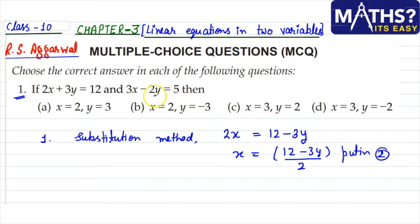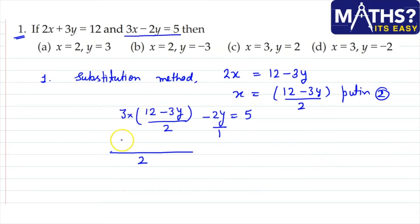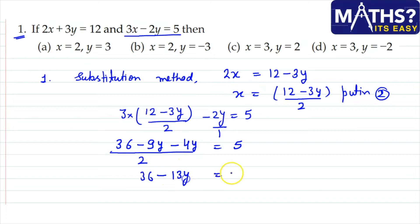We substitute this x value into the second equation: 3 × (12 - 3y)/2 - 2y = 5. Multiplying out the bracket gives 36 - 9y. So we get 36 - 9y - 4y = 10, which simplifies to 36 - 13y = 10.